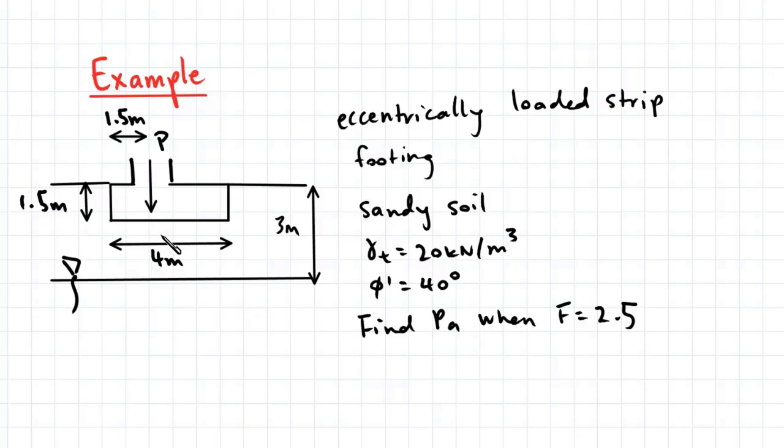Now we're dealing with a sandy soil here so this means that our cohesion is equal to zero and our unit weight for the soil is 20 kN per m³ and our angle of friction is 40 degrees and we're interested in finding out what the maximum allowable force is when our factor of safety is 2.5.